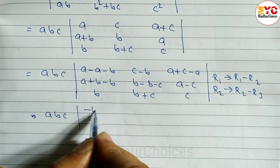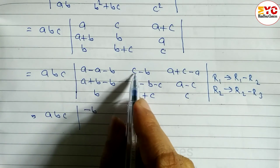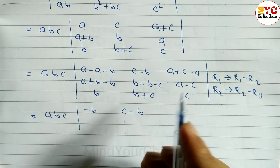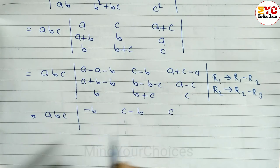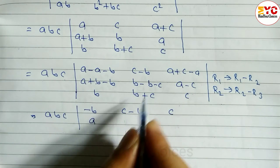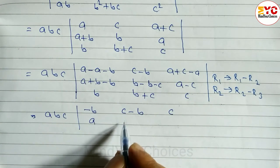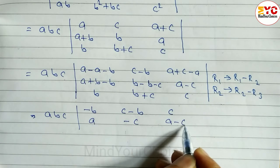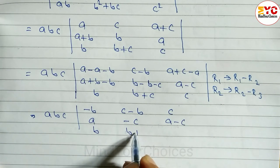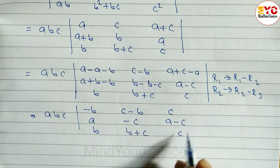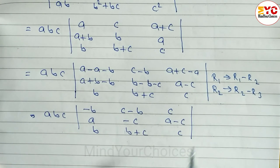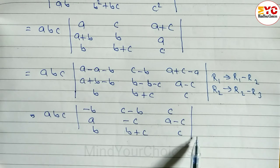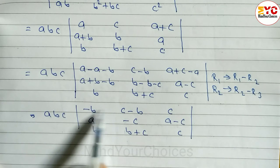Let's solve: in row 1, a and a cancel leaving 0, c minus b remains, and b and b cancel leaving a minus c. In row 2, b and b cancel leaving a, minus c remains, and a minus c simplifies. Row 3 stays as b, b+c, and c.